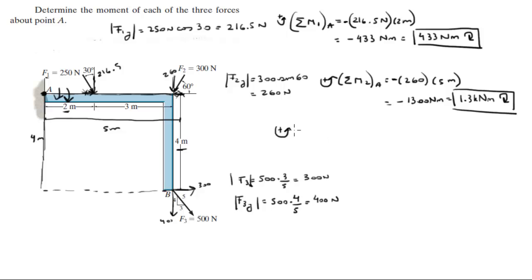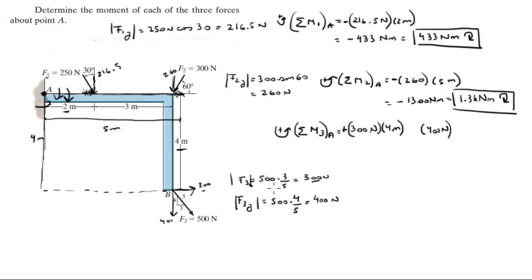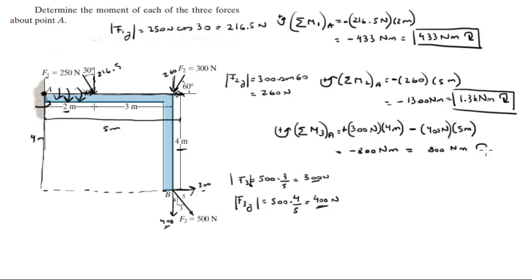The moment that Force 3 creates about A equals the 300 newton component turning a 4-meter lever arm counterclockwise — positive — plus the 400 newton component pushing straight down along a 5-meter lever arm clockwise — negative. Plugging in, this comes out to negative 800 newton-meters, or 800 newton-meters going clockwise.